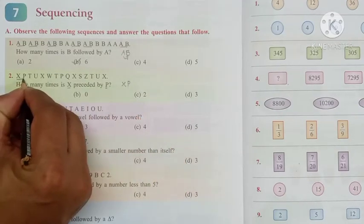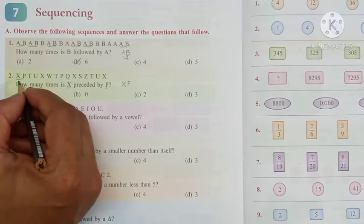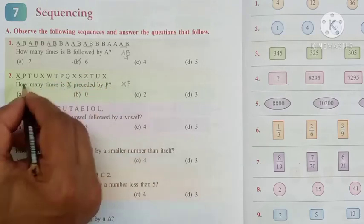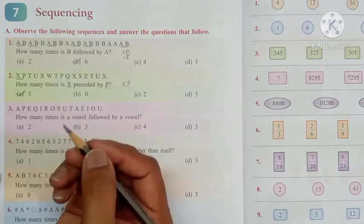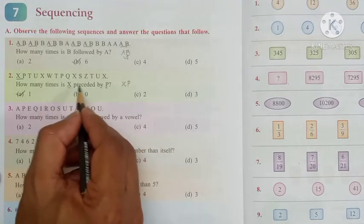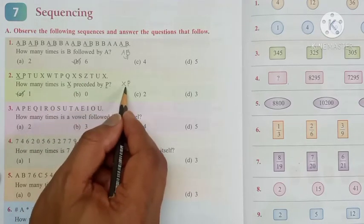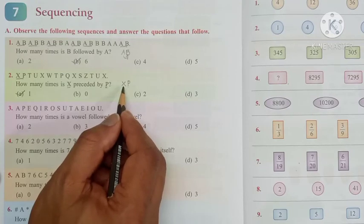So X, P, 1. There is no such combination in the given sequence. So option A. X preceded by P means we should check for the combinations like X and P.